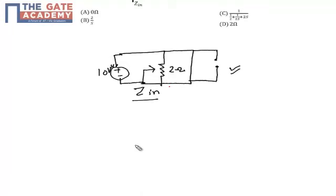Zin - basically this network is effectively a parallel combination of a short circuit wire and a 2 ohm resistor. So if I calculate the Zin for a parallel network, 2 ohm and short circuit wire will have an impedance of 0 plus 2 plus 0.